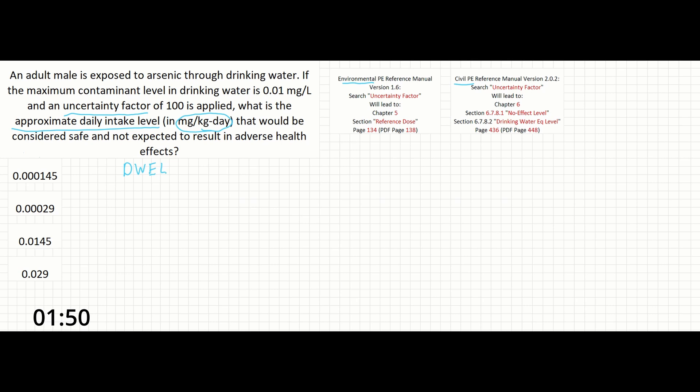So our first equation is going to be DWEL, which is the drinking water equivalent level, is equal to the reference dose RFD times weight over Q, which is our amount of water consumed. More on that later.